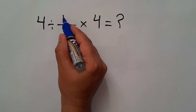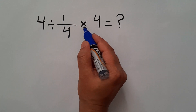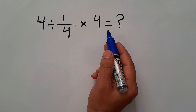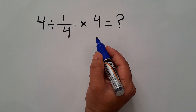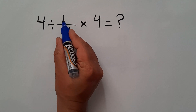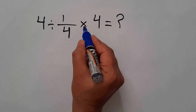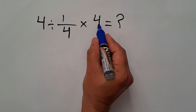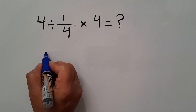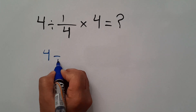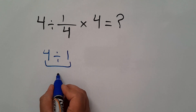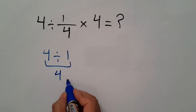4 divided by 1 over 4, then times 4. Our goal is to find the value of this expression. Are you ready to solve? Let's go ahead and get started. Here we have 1 over 4 and times 4. We can easily cancel this 4 and this 4. So, 4 divided by just 1, and this is equal to 4. But this answer is not correct.